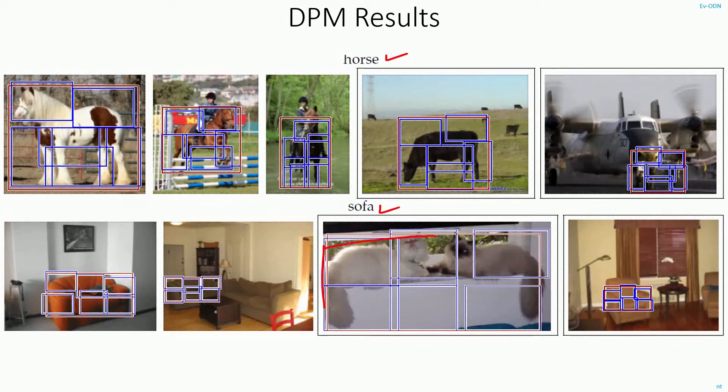We can see one error in the detection. These are two cats actually, but to the computer, it looks like a sofa, so it detected as a sofa.